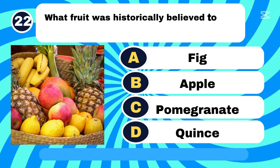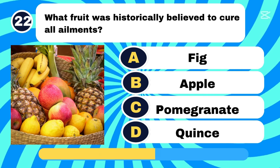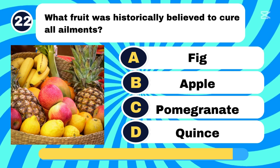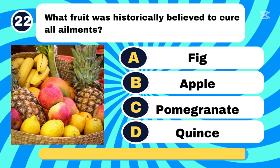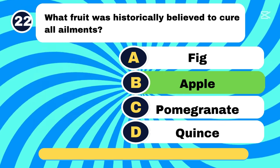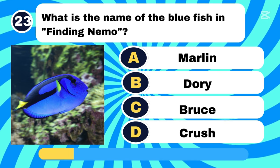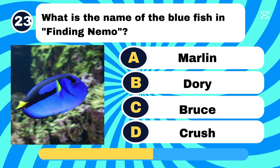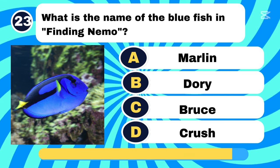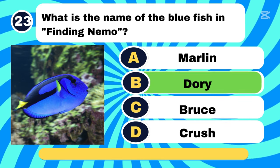What fruit was historically believed to cure all ailments? Letter B, Apple. What is the name of the blue fish in Finding Nemo? Letter B, Dory.